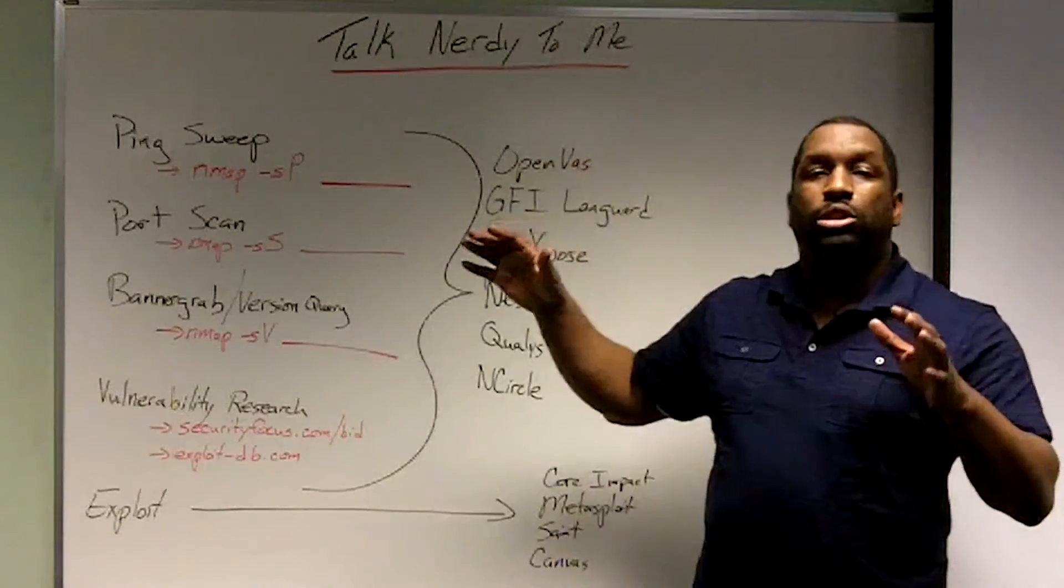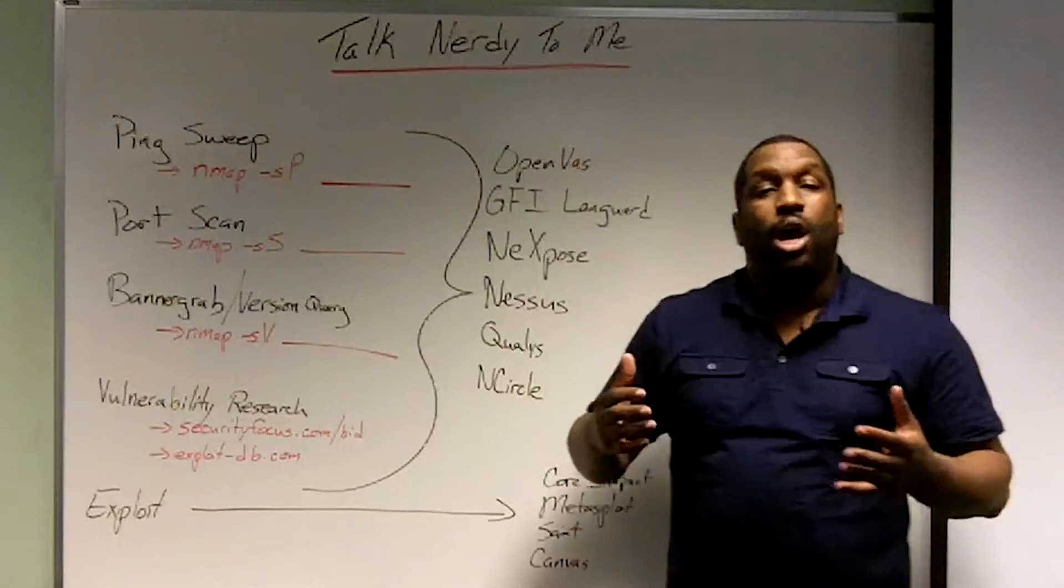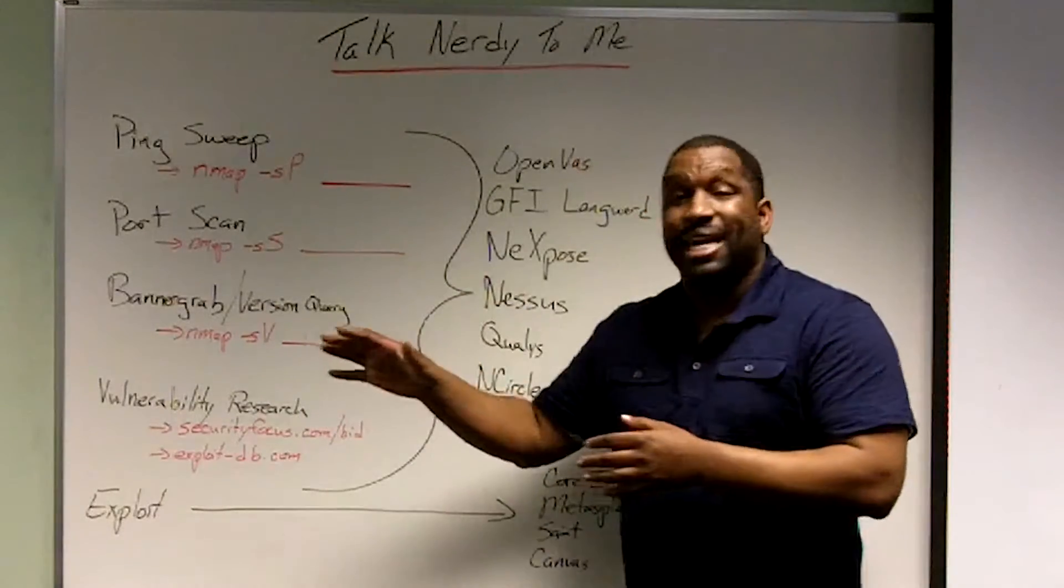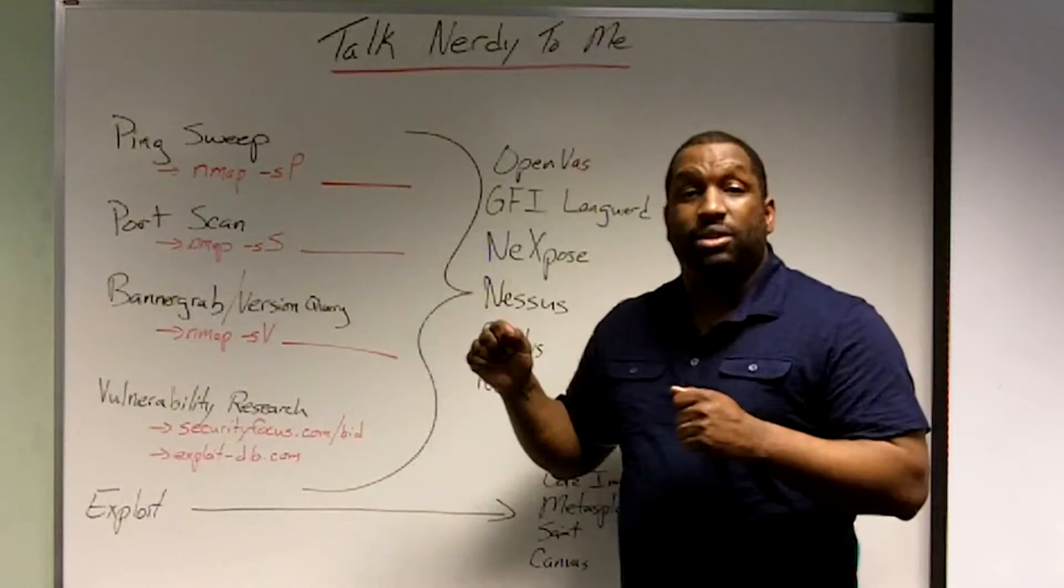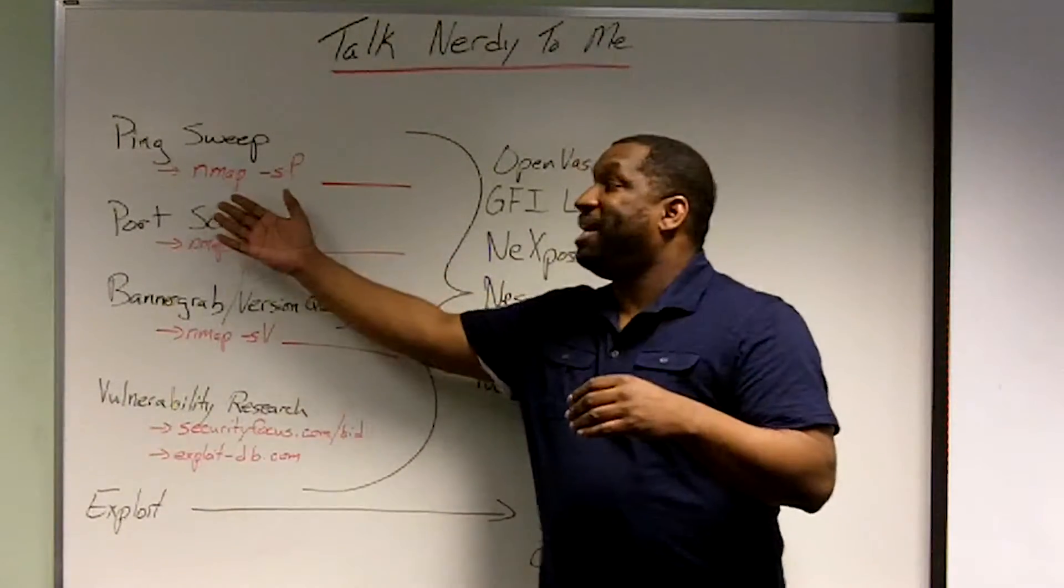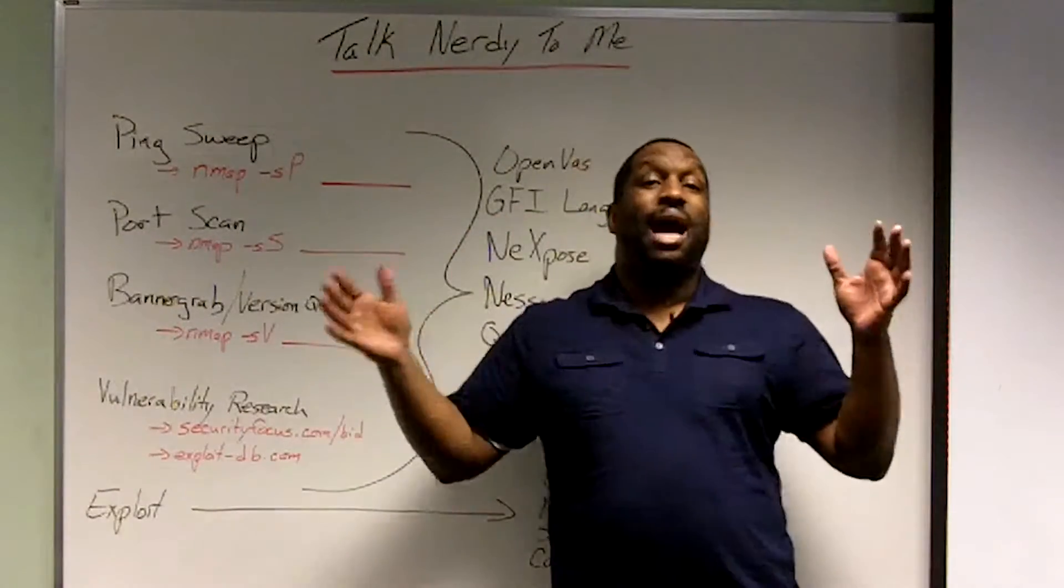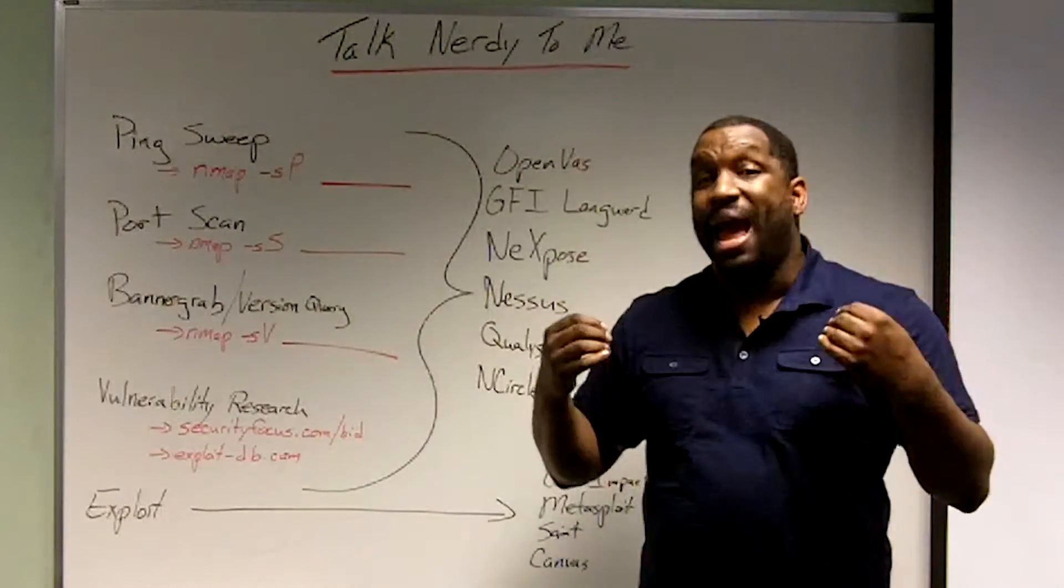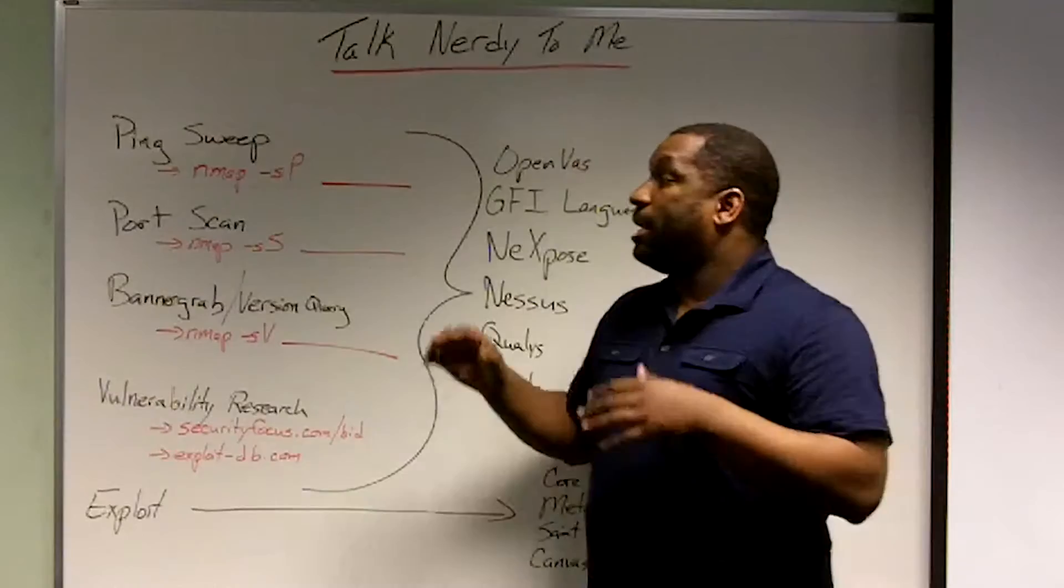Your vulnerability scan usually starts off with something like a ping sweep. When you want to know if a host is online, you ping it. Can I ping that IP address? If it pings, it's online, it's up. So you'll start by pinging the entire subnet. You'll ping every computer in the entire network. The ones that respond back, that computer's online.